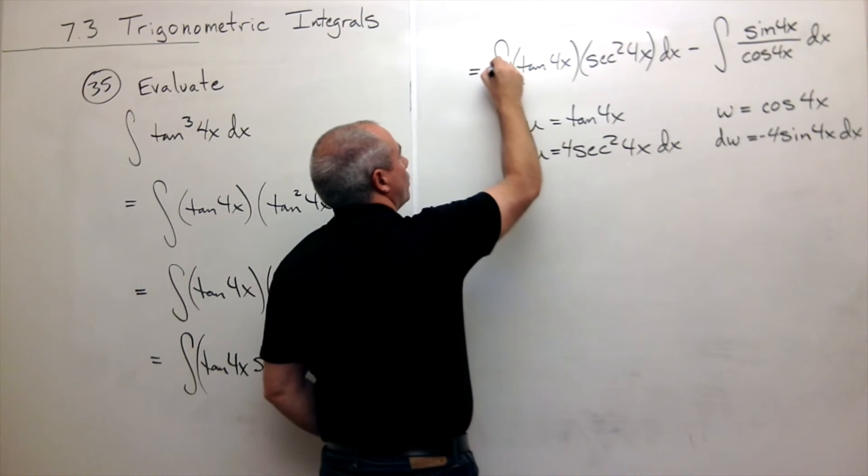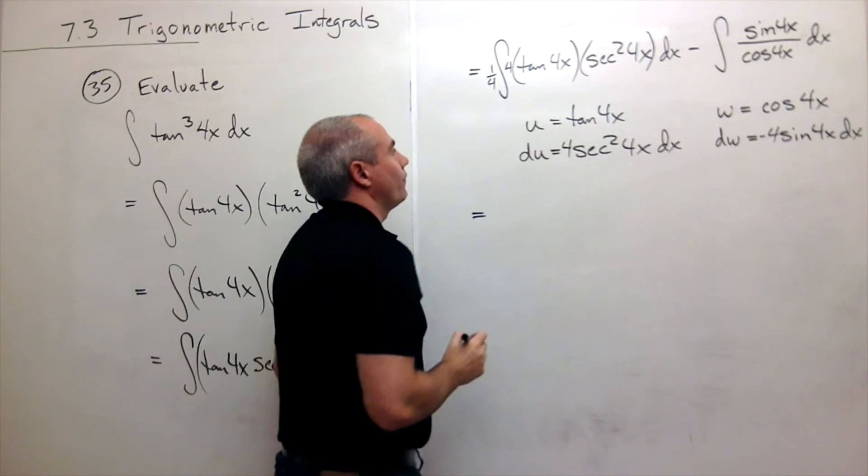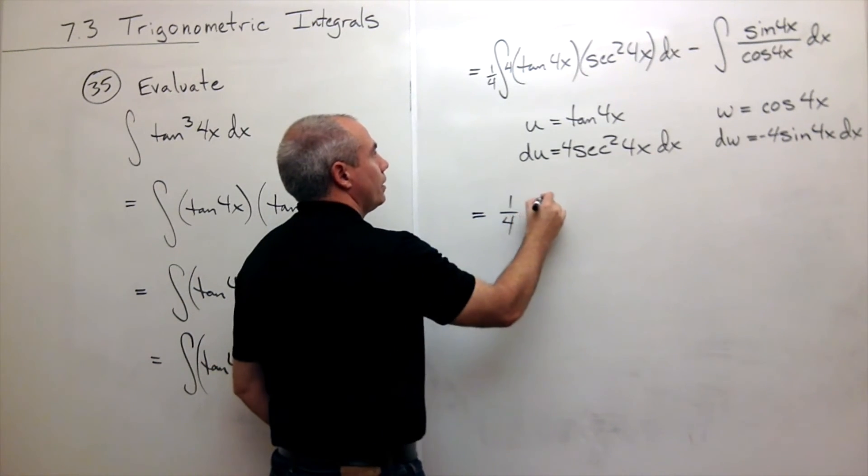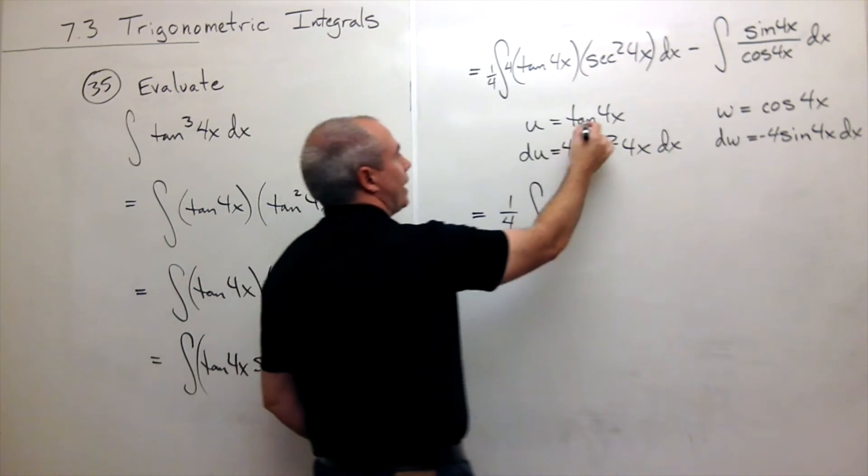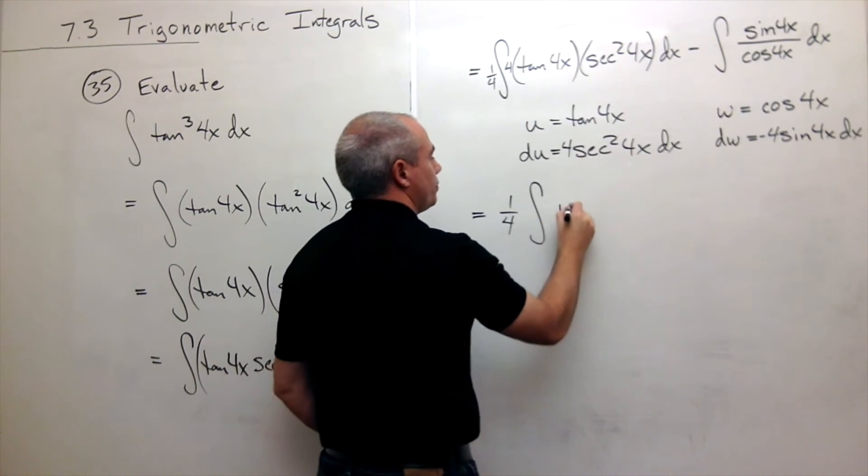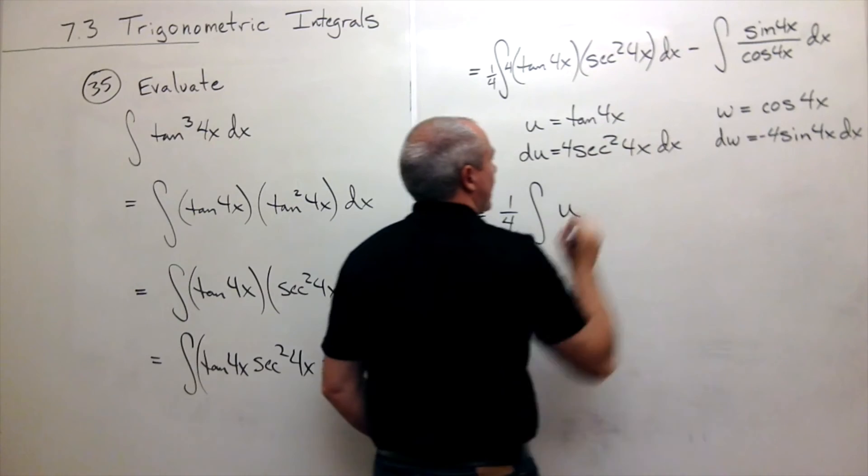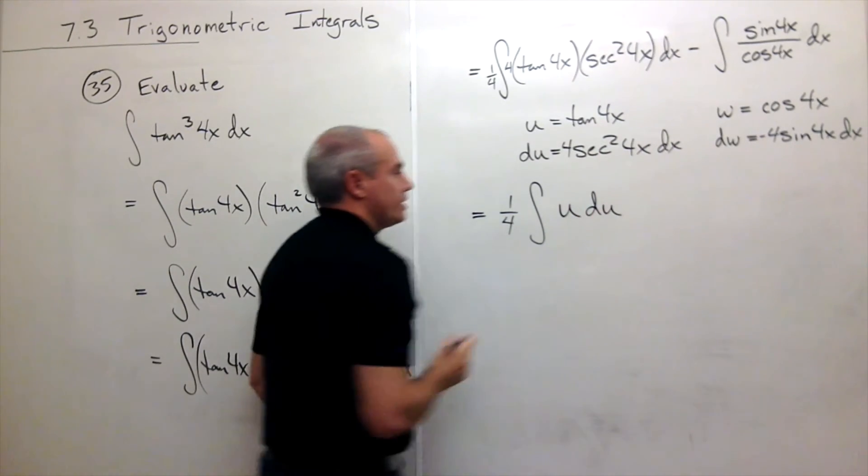So I'll put in a little 4, which means I can put in a little 1 fourth. Now the substitution will look like 1 fourth the integral of tangent of 4x becomes my u. And 4 secant squared of 4x dx all becomes my du.